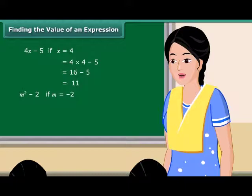Similarly, if m is equal to 7, then the value of the expression m square minus 2 will be equal to 47.